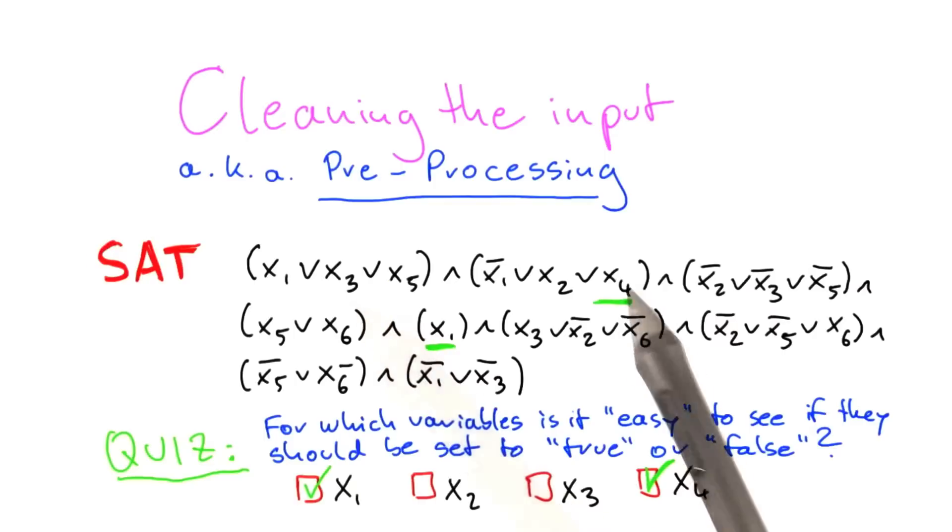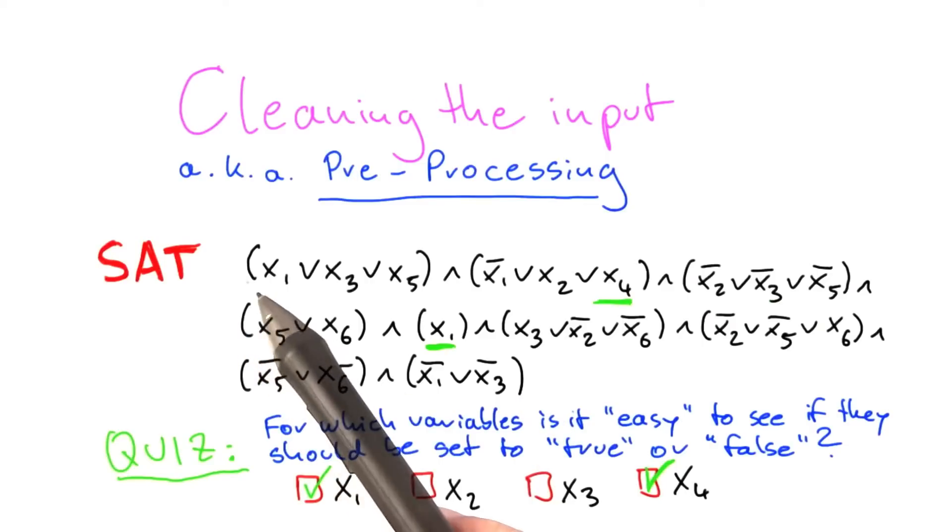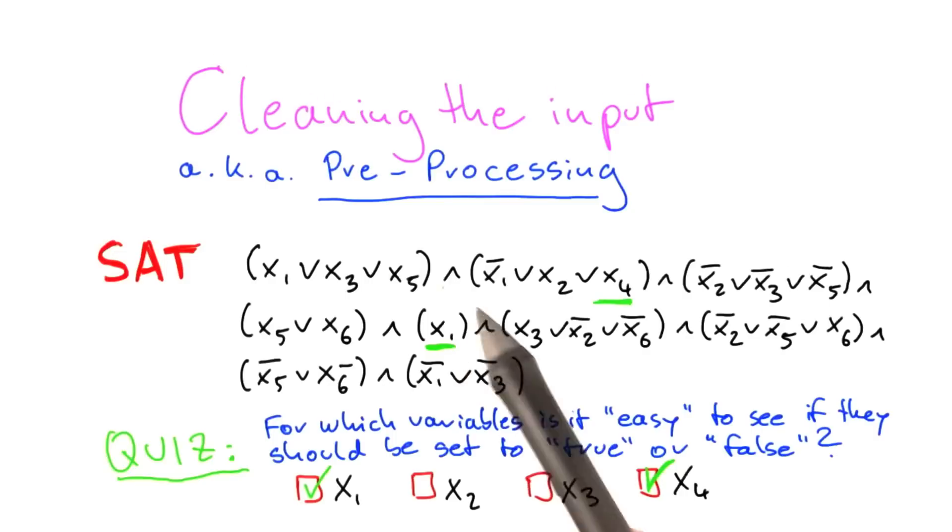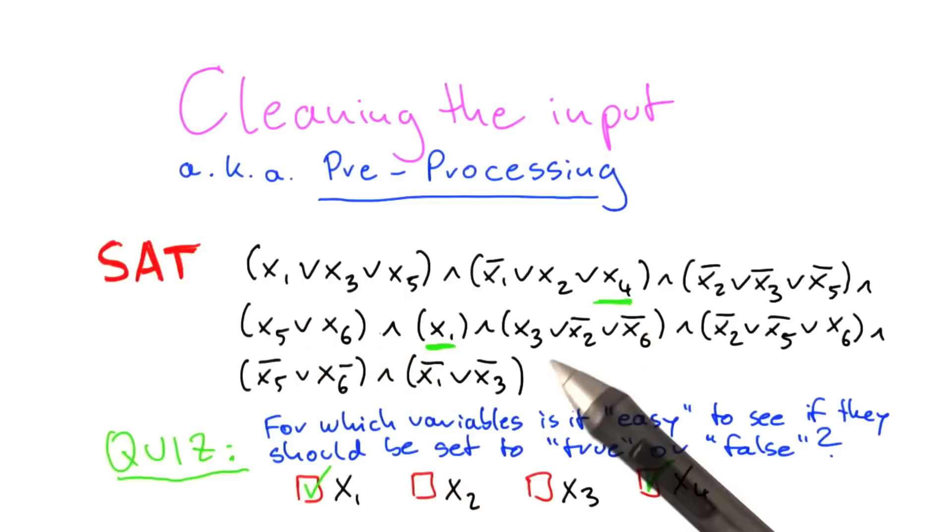So if a variable appears just once, we have nothing to lose. We can just set x4 to true, satisfying this clause here, and it has no secondary effects on any of the other clauses. And of course, an algorithm could also do this very easily. The algorithm just looks at each variable and counts how often that variable appears, and if a variable appears just once, it knows how to set it. So here we have x4, we would set it to true. If we had not x4, we would set it to false.